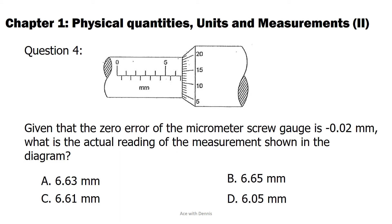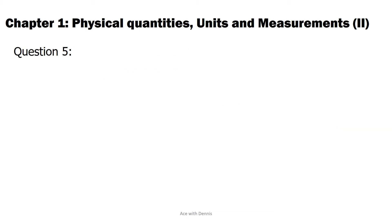The answer is B. 6.65 millimeters. Make sure you know how to take the reading from micrometer screw gauge. You can refer back micrometer screw gauge topic if you have forgotten how take reading from micrometer screw gauge.